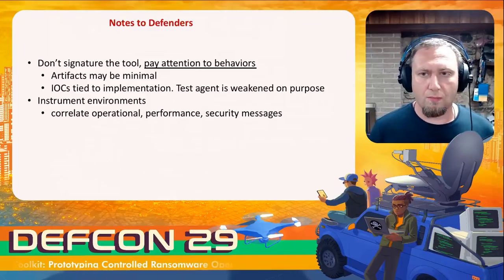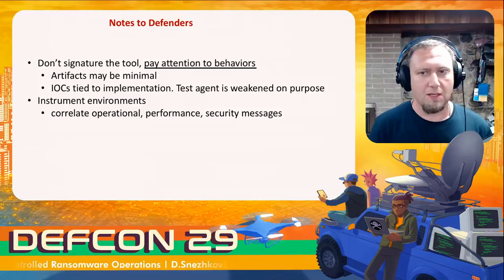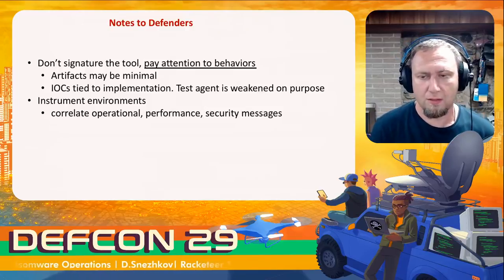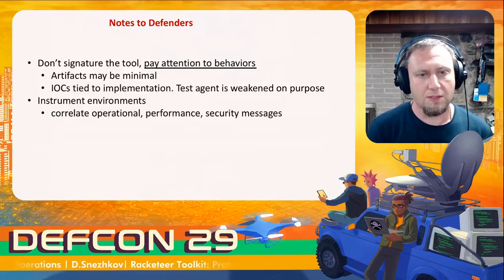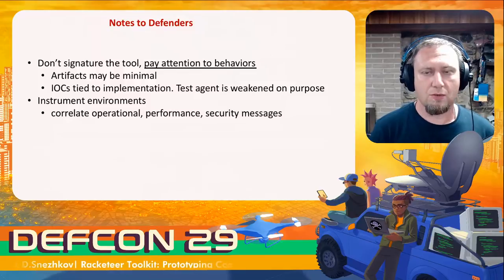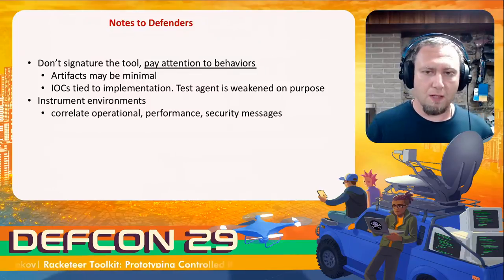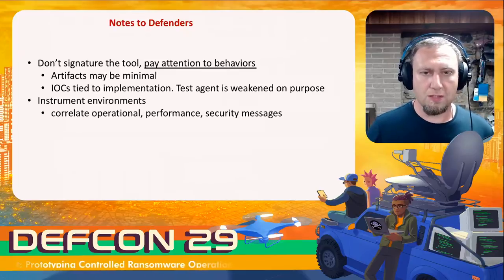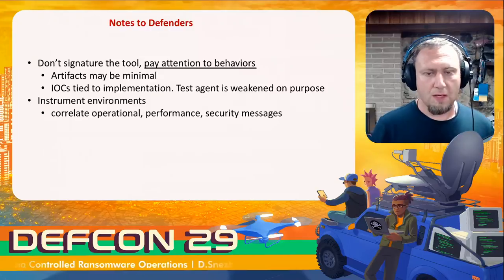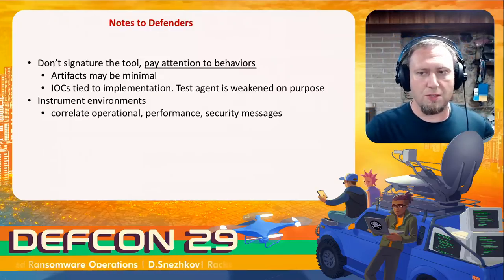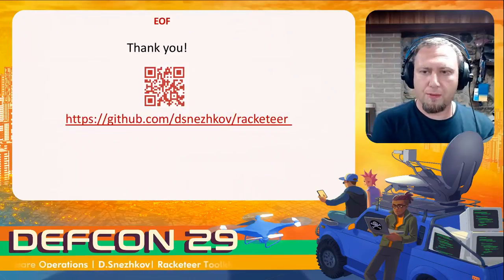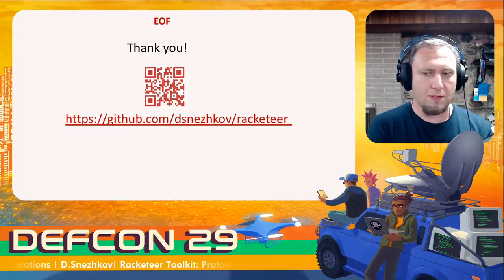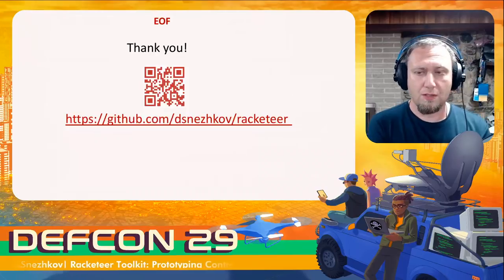For defenders: don't just signature this tool — pay attention to behaviors, because artifacts may be minimal since it's all in memory. But TTPs still exist: the lateral movement and sequential encryption of files are still present. IOCs are tied to implementation, and the agent has been deliberately weakened to showcase injection and analysis points. Instrument your environments to correlate operational performance and security messages. Here is the link to the open source code for Racketeer. Thank you very much.